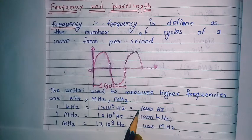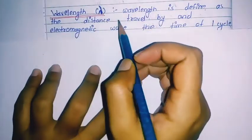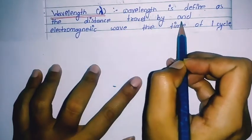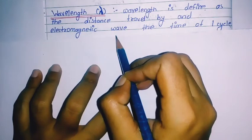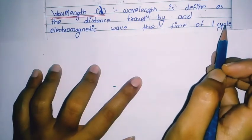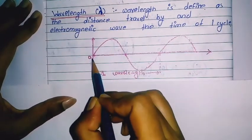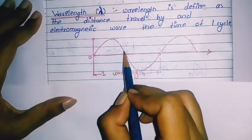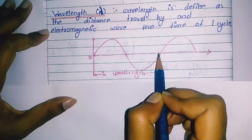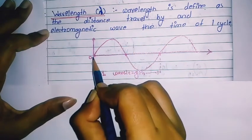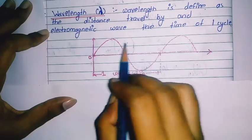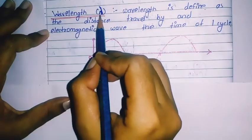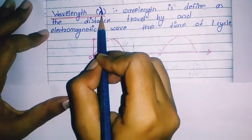Now let's see the definition of wavelength. Wavelength is defined as the distance traveled by an electromagnetic wave during the time of one cycle. The symbol used to denote wavelength is lambda (λ).